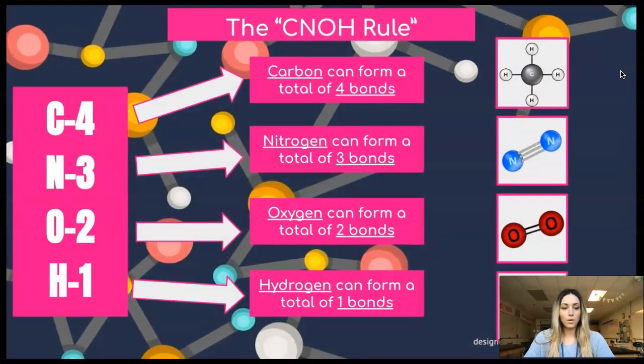A very helpful rule in taking a chemical formula and trying to turn it into a molecular model is our CNOH rule. It might be helpful for you to create a mnemonic device to remember this, like crossroads is not over here, something like that. So CNOH, we want to count down from four down to one.